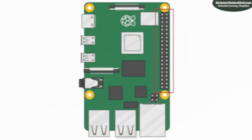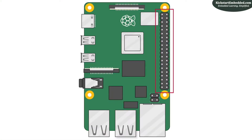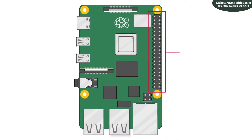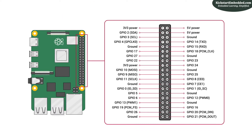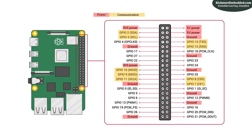We previously saw the feature-rich 40-pin connector of the Raspberry Pi. This is the mapping of the I/O pins which are brought out on the connector. You have primarily three broad categories of I/O: Power, Communication, and Sound. All the pins other than power can be used as general-purpose I/O as well.